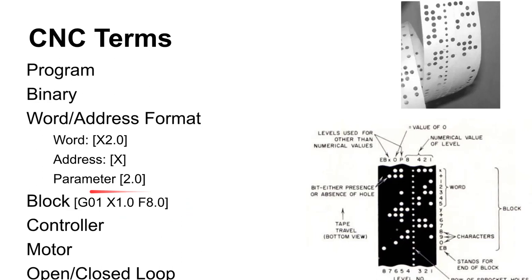Symbols are grouped into blocks and executed block by block. Inside a block is what we call word address format. A 'word' is something like X20 — it all gets analyzed together. When the controller sees X, it expects to see a numeric value after it. If you have X followed by Y, it throws an error. After the letter X, it expects a parameter — some kind of number up to four decimal places. These words get grouped into blocks and executed block by block.